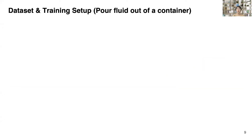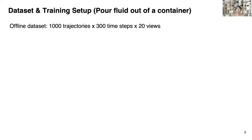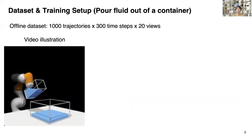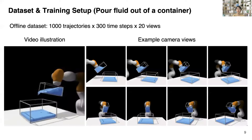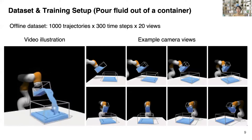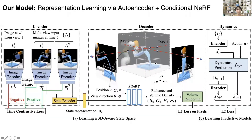In our setup, we apply randomly generated action sequences to the simulator and generate 1,000 trajectories as an offline dataset for each environment. Each trajectory contains 300 time steps, and each time step contains visual observations from 20 viewpoints. We show a video illustration of one trajectory and 8 images from viewpoints inside the training distribution. In this paper, we propose to learn a time-environment action-conditioned dynamic model for visual motor control, the core of which is the ability to learn 3D-aware neural scene representations.